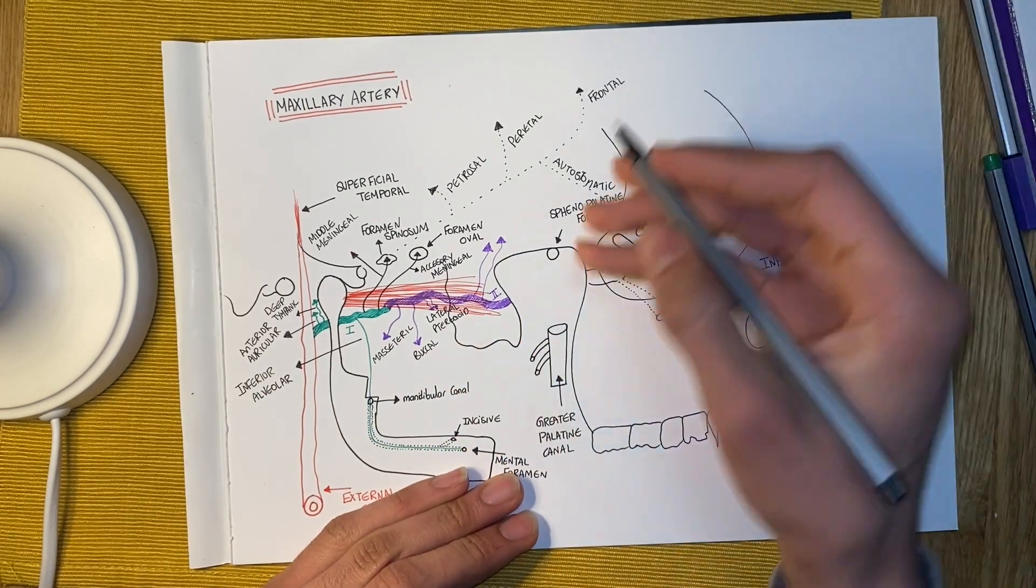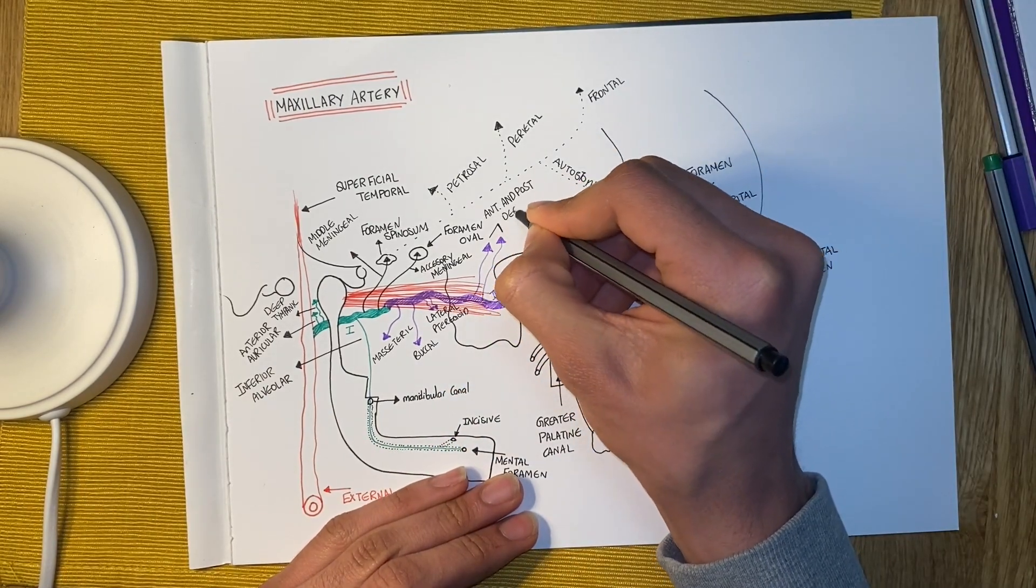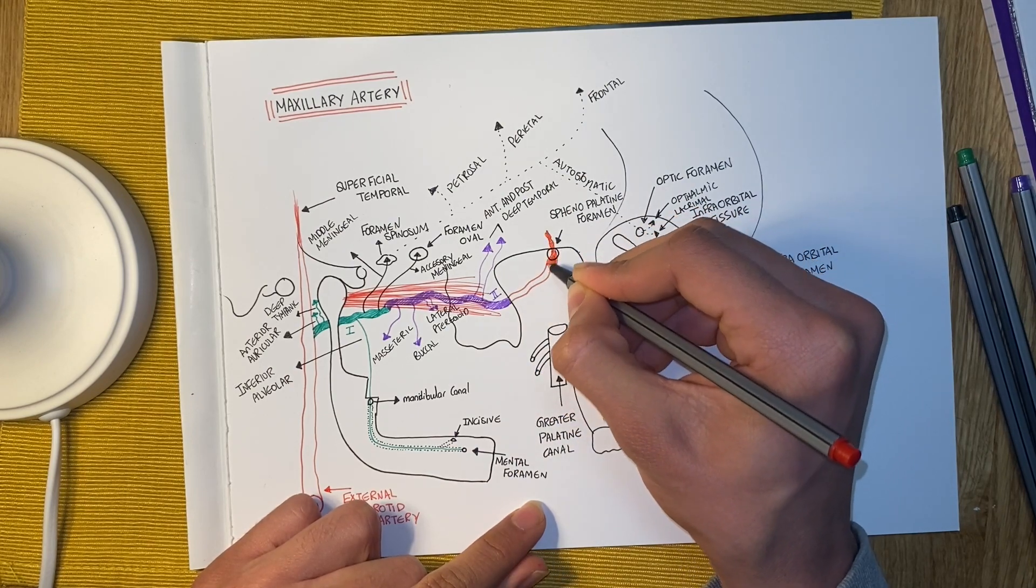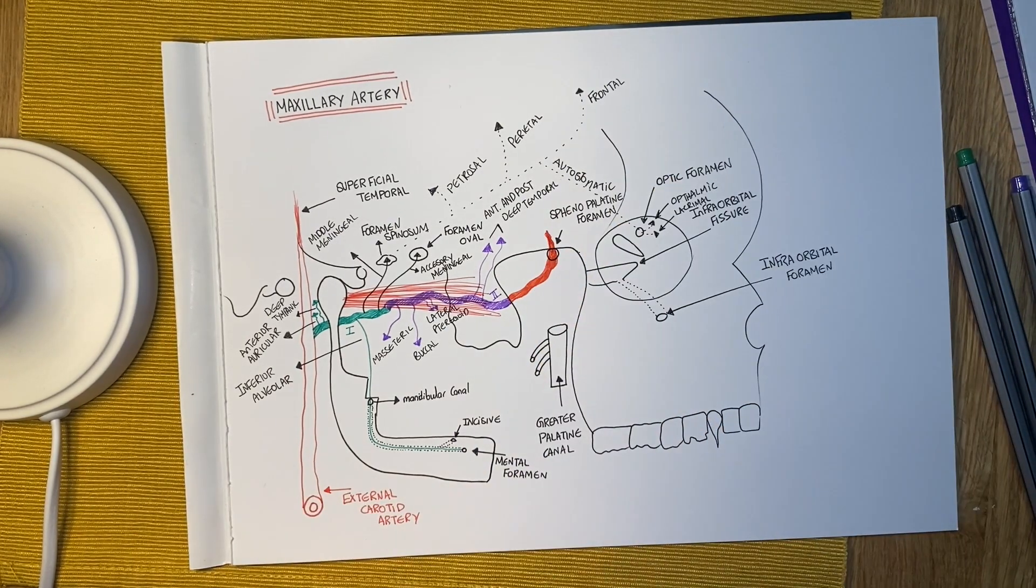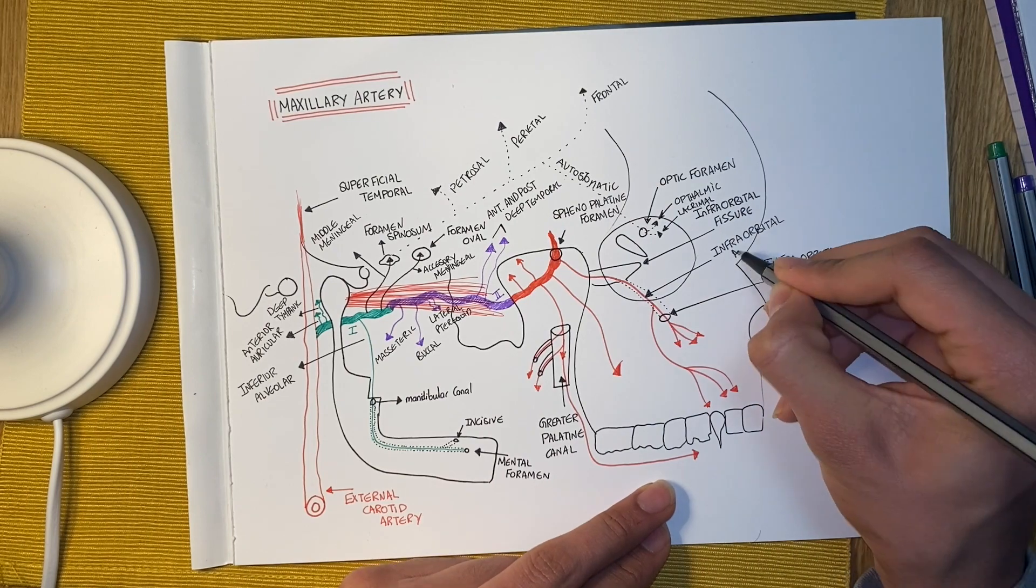Masseteric, buccal, lateral pterygoid, anterior and posterior deep temporal. Third part is called pterygopalatine and it also has branches.